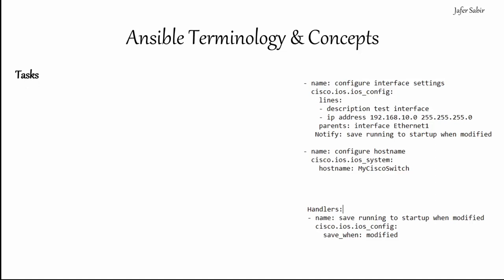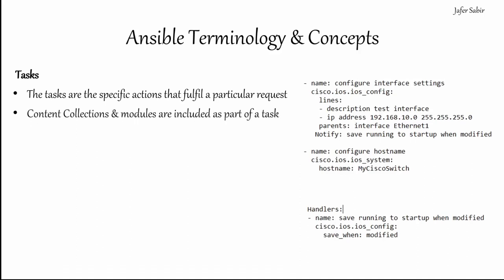Tasks are actions to run your code — they call an Ansible module to do something. You create tasks as part of a playbook and they run sequentially, one at a time. For example, you might have tasks to ping all hosts, set up NTP, configure DNS, and then back them up. Multiple tasks run sequentially from top to bottom.